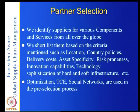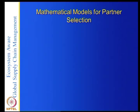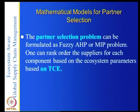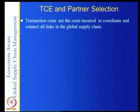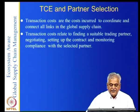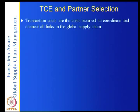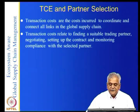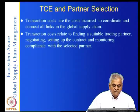The partner selection problem can be formulated using fuzzy AHP or multi-integer programming, and one can rank-order suppliers for each component based on ecosystem parameters and transaction cost economics. Transaction costs are the costs incurred to coordinate and connect all the links in the global supply chain — they relate to finding a suitable trading partner, negotiating, setting up the contract, and monitoring and compliance. Transaction costs include observable costs such as transport costs, import costs, and customs, and also soft costs.